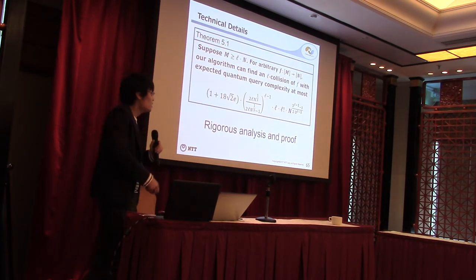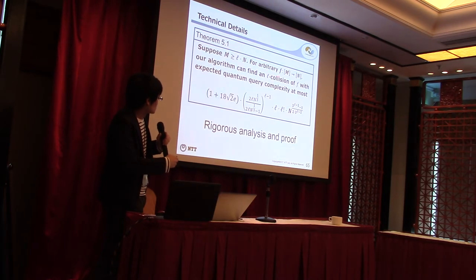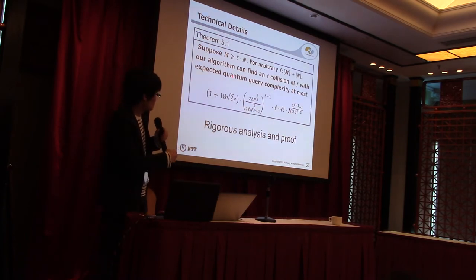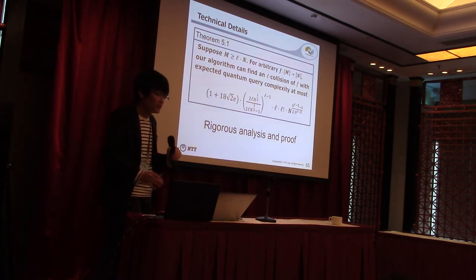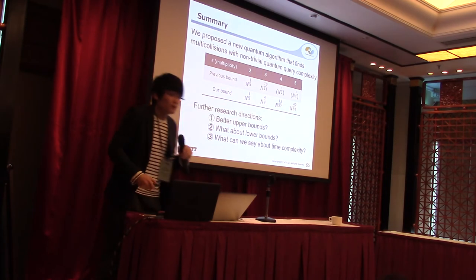We proved a theorem: suppose m ≥ L·n, then for arbitrary function f, our quantum algorithm can find an L-collision of f with expected quantum query complexity at most the stated bound. To prove this theorem, we gave a rigorous mathematical proof and analysis, though the technique is somewhat complex. I don't describe the proof here; for more details, please read our paper.